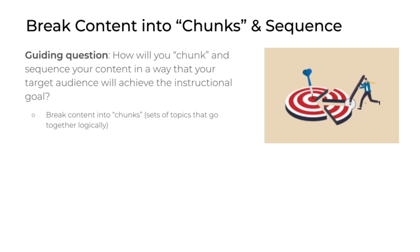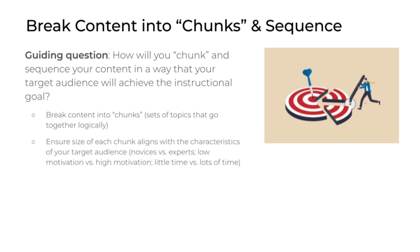The first step in this process is to break the content into chunks. A chunk is simply a set of topics that go together logically. When breaking your content into chunks, you need to ensure that the size of each chunk aligns with the characteristics of your target audience. Think about how chunk size would change if you were working with novices versus experts, learners with low motivation versus high motivation, or learners who are very busy versus those with a lot of time to spend with your instruction. All of those characteristics are factors that influence the size of each chunk.